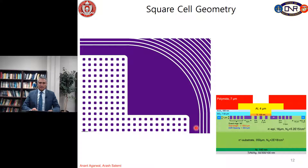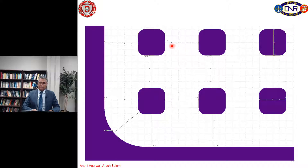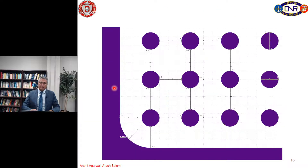The next geometry is square cells. We can change the fingers to square cells with the same distances — a width of 2 micrometers for the squares and a distance of 2.5 micrometers between them, even at the corners. I also replaced the squares with circles, which have a diameter of 2 micrometers with a distance of 2.5 micrometers in all parts of the device.